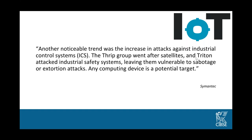One of the things the report talked about was increased attacks against industrial control systems. The Thrip group went after satellites, and Triton attacked industrial safety systems, leaving them vulnerable to sabotage or extortion attacks. Any computing device is a potential target now. When I started in building services engineering, computing devices and building services products were completely different things — these days they're less so. You often find internet connectivity in industrial controls, building services controls, BMS systems, and even light fittings now have Bluetooth connectivity, all carrying some level of cyber vulnerability risk.